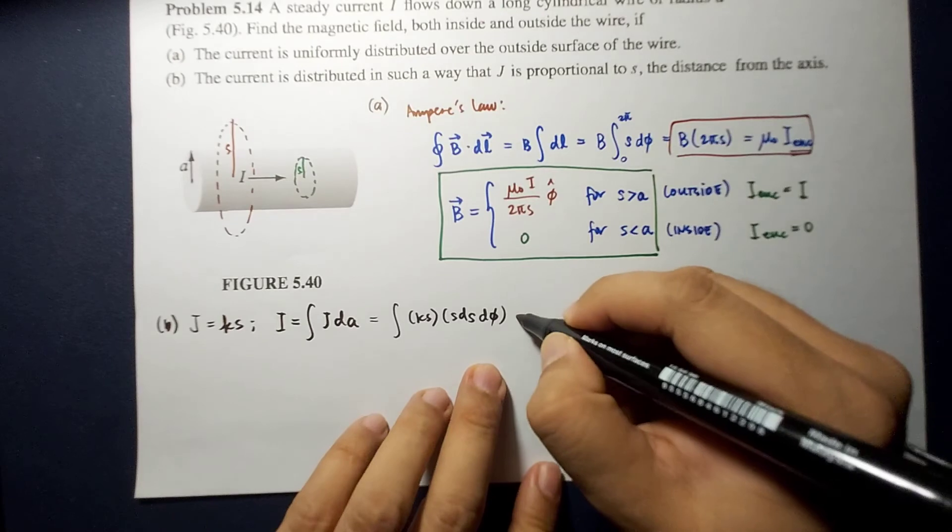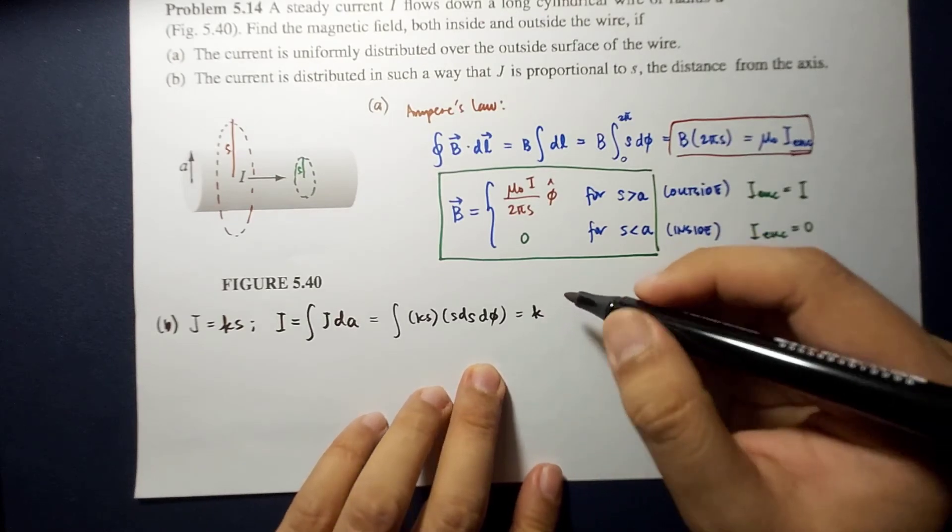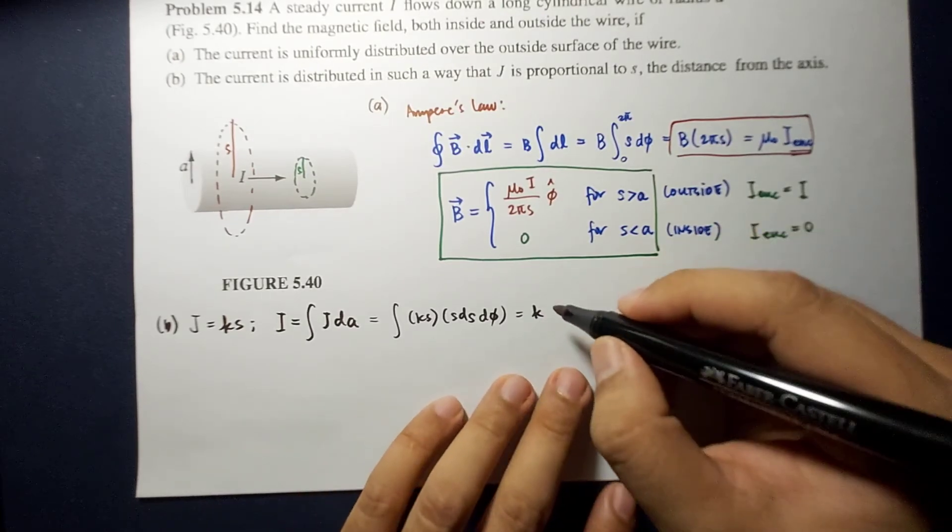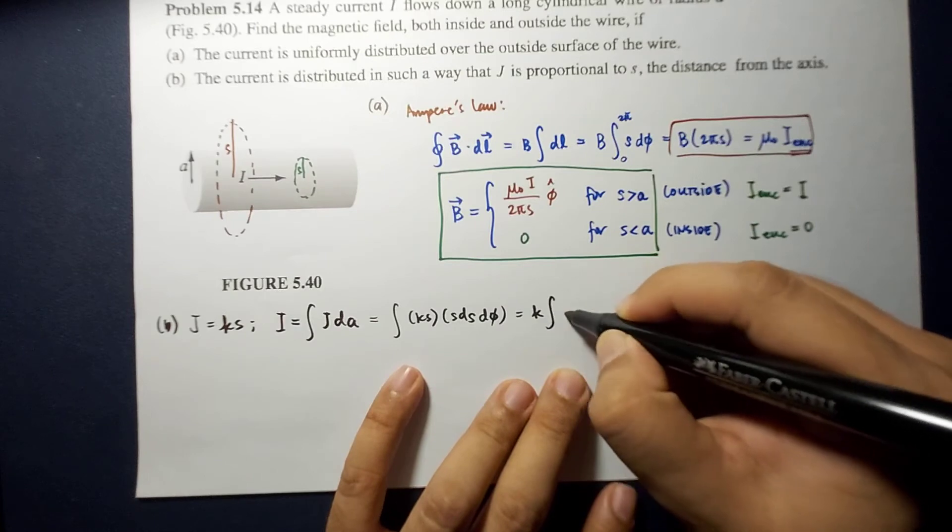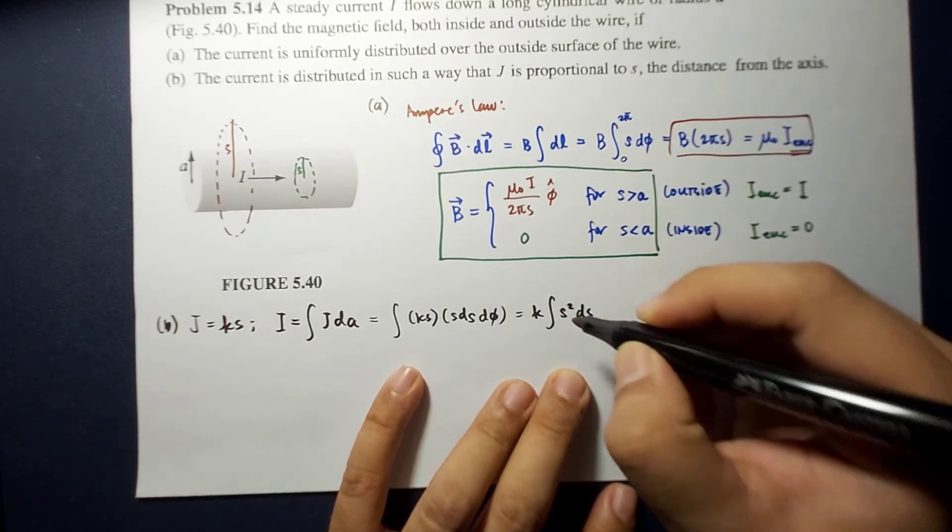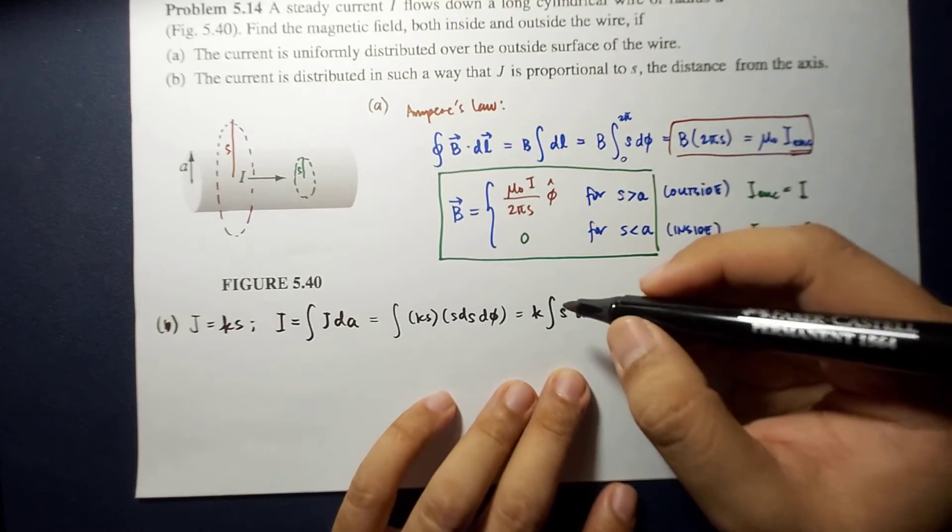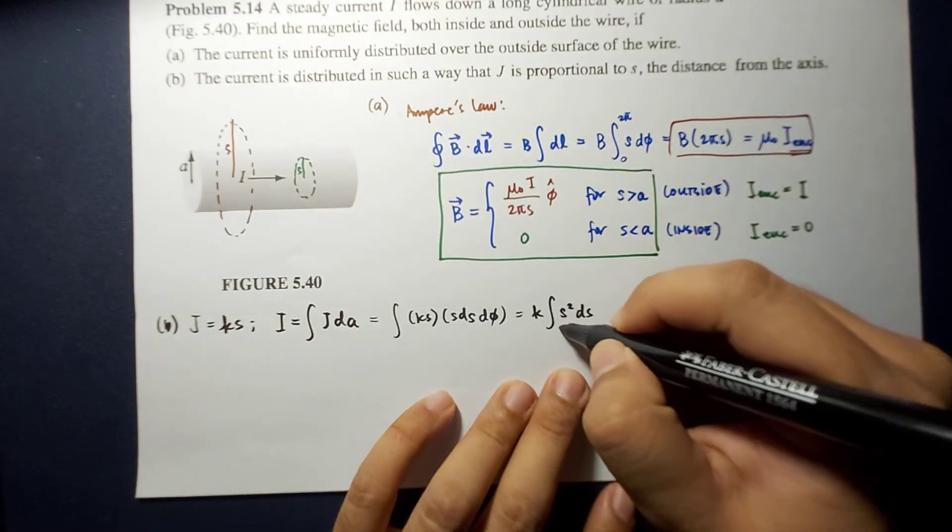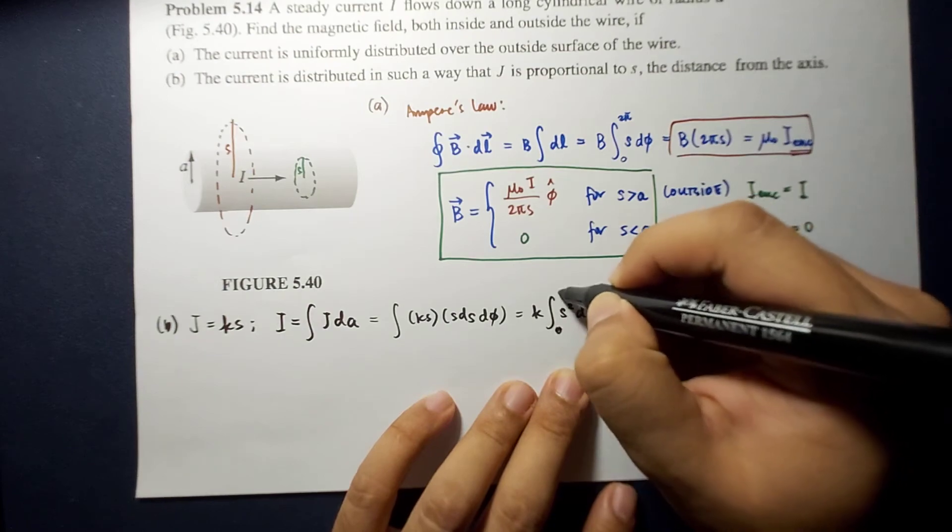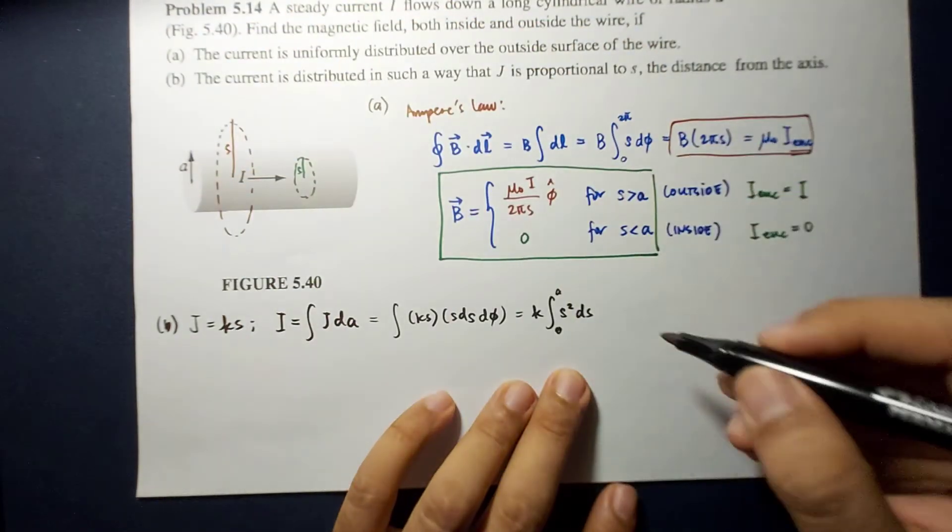So, this is now equal to K times what? This is K times S squared dS. Okay? Then, evaluated from 0 to A, because we're only looking for the wire, the current in the wire.